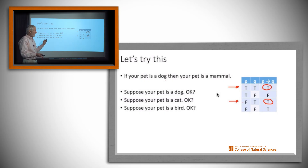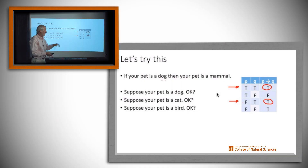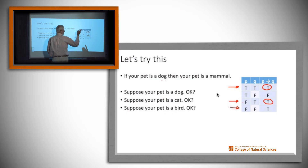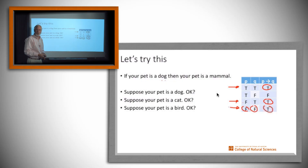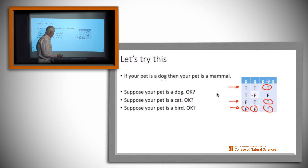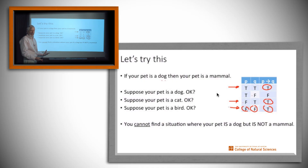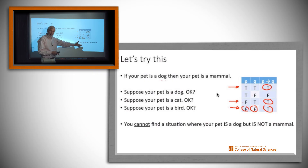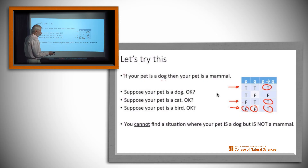What if your pet is a bird? Your pet is not a dog, and since it's a bird, it's not a mammal either — both antecedent and consequent are false. We say the implication is true in that case as well. The only case we care about being false is when the antecedent is true and the consequent is false. We can't find a single situation where the pet is a dog but is not a mammal, so this statement is true.